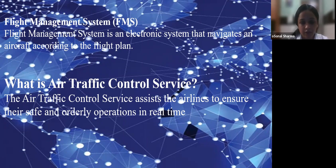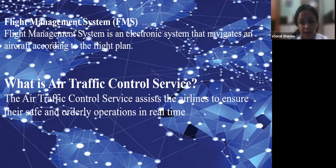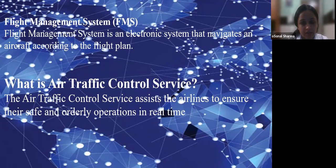The air traffic control service assists airlines to ensure safe and orderly operations in real time. The ATS is responsible for preventing aircraft collisions, providing aid for the safe and efficient conduct of flights, carrying out and maintaining an orderly flow of air traffic, and notifying concerned organizations and assisting in search and rescue operations of aircrafts.